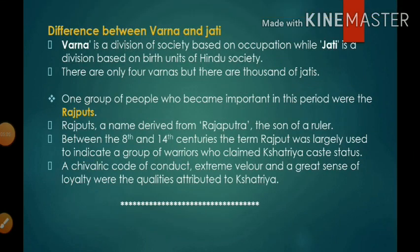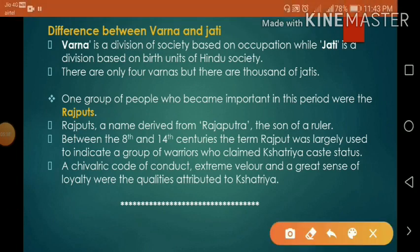The difference between Varna and Jati is very important. Varna is a division of society based on occupation, while Jati is a division based on birth — units of Hindu society. There are only four Varnas but there are thousands of Jatis.